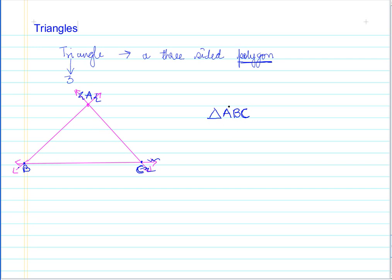Let us identify the characteristics of triangle ABC. A triangle has three sides, and an interesting thing is that a triangle is a polygon with the least number of sides — consider whether it's possible to have a polygon with fewer than three sides. The three sides are line segments AB, BC, and CA.